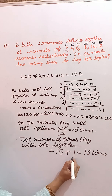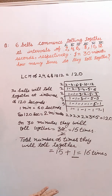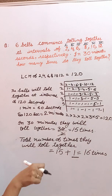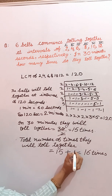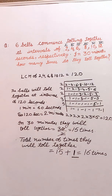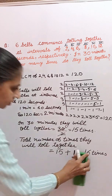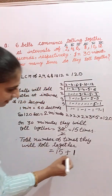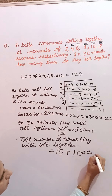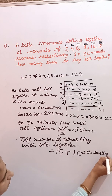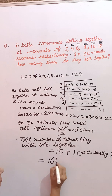Why this plus 1? This is because the bells also ring at the starting point — they toll together at time zero. So 1 is added for the starting point, giving us 15 plus 1 equals 16 times. Hope you liked this video, thank you.